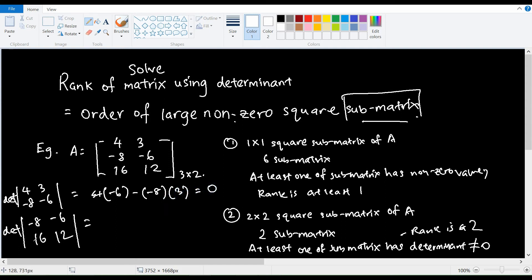and this gives me 0. How about the second submatrix, which is negative 8, negative 6, 16, and 12. So we take negative 8 times 12, minus 16 times negative 6,